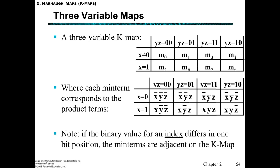Once we get to the three-variable K-map, things start to get more interesting. It's important to remember the location of the indices. Notice how it's not a straight count of 0, 1, 2, 3, 4, 5, 6, 7, but actually 0, 1, 3, 2, 4, 5, 7, 6. This is because adjacent cells only differ by one bit at a time. If we wrote it going 0, 1, 2, 3, then adjacent cells would differ by both the first and the second bit, which is not what we want. We want it to differ by just one bit — like the Y value changing from not-Y to Y while Z stays the same.